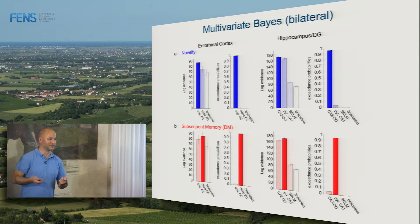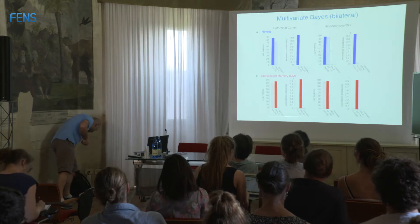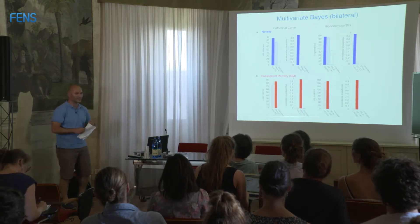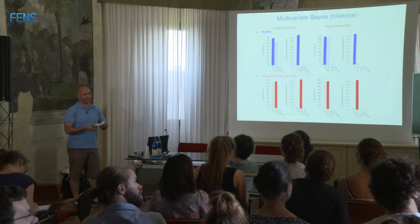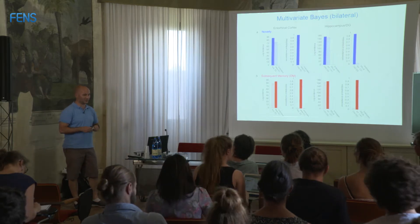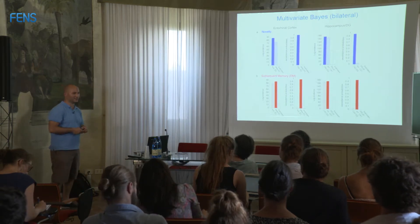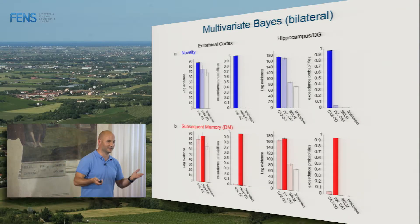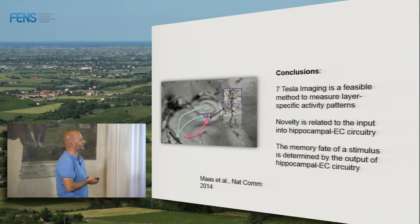These data suggest that novelty is related to the input into the circuitry, whereas the memory fate is related to the output. If you have tau in that region, maybe it causes a functional impairment in the input to the hippocampus — so the novelty that goes into the hippocampus is representationally corrupted. This is really just the beginning of this type of research, and now that the technology is becoming more widespread, other labs can do similar things. We then used the same task in the DELCODE study — with subjective memory complainers, mild cognitive impairment, and early Alzheimer's disease participants — to see how this relates to changes in CSF biomarkers, using 3 Tesla rather than 7 Tesla.